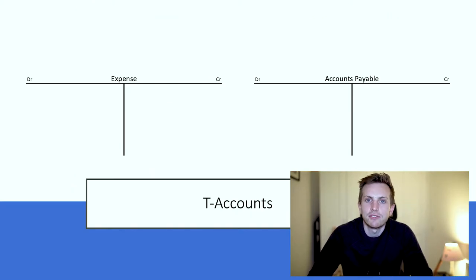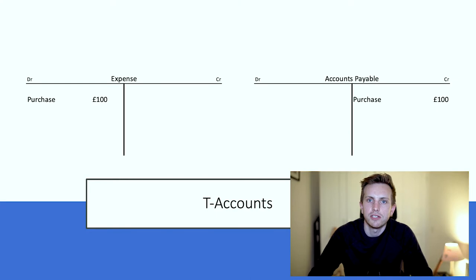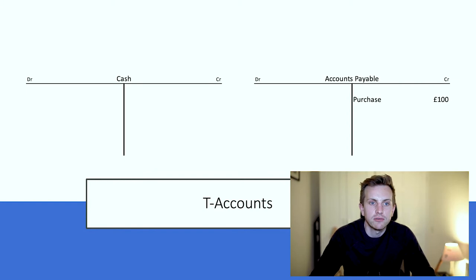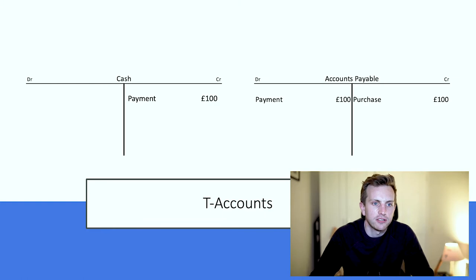I'm now going to go through the T-accounts associated with recognising an accounts payable position. I start with an expense T-account and an accounts payable T-account. When I incur an expense for £100, I debit my expense column £100 to increase my expenses, and I credit my accounts payable position to increase the liability section on my balance sheet. Then when I make a payment, I bring up a cash T-account, debit my accounts payable position, and credit my cash account, reducing my current asset position on my balance sheet.